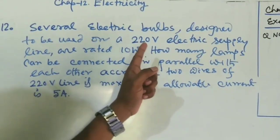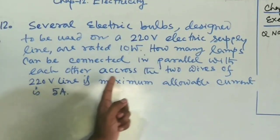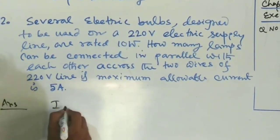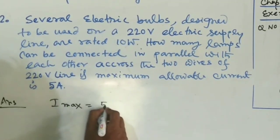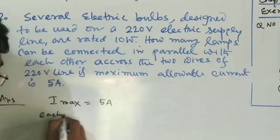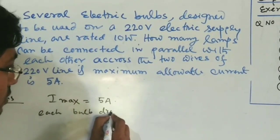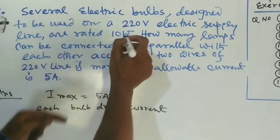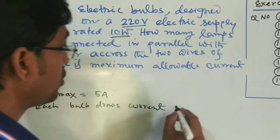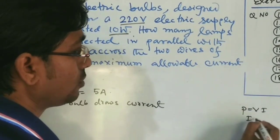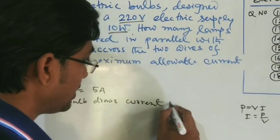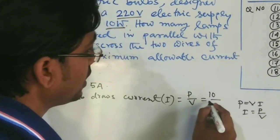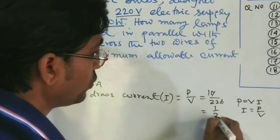Question 12: Several electric lamps designed for a 220-volt supply are rated 10 watt. How many lamps can be connected in parallel if the maximum allowable current is 5 ampere? Each lamp draws current I = P/V = 10/220 = 1/22 ampere.